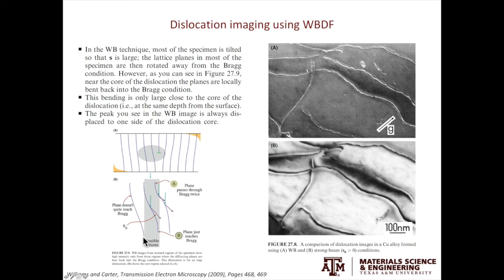The examples on the right show the difference between the two-beam condition and the weak beam dark field condition. In the two-beam condition, it's hard to tell whether it's one or two dislocations. But from the weak beam dark field image, you can clearly tell there are two dislocations — these are either dislocation dipoles or two partials.